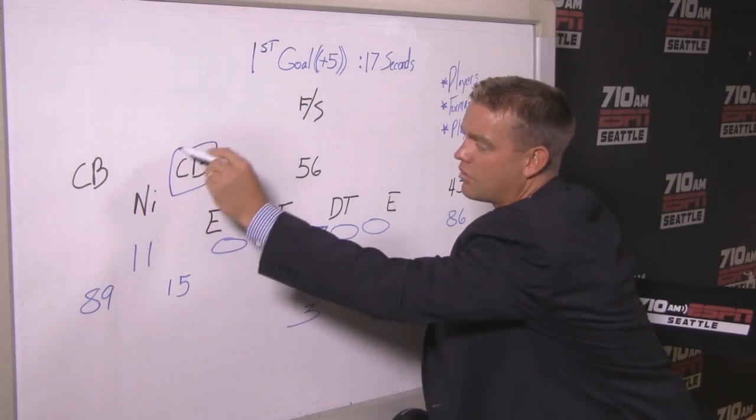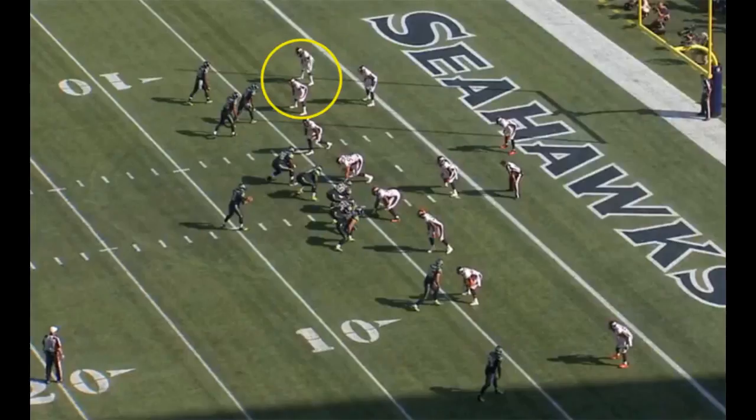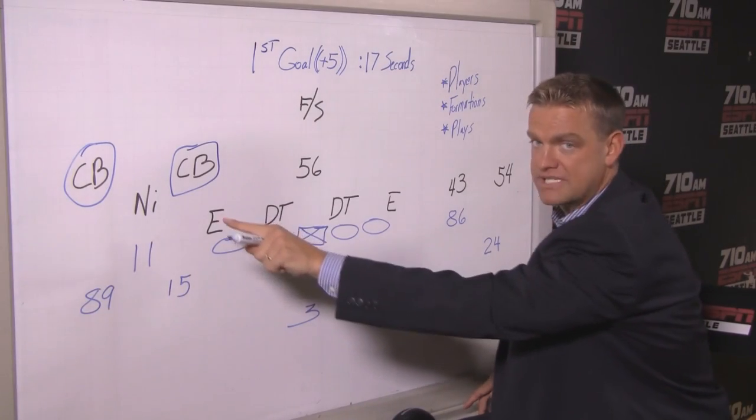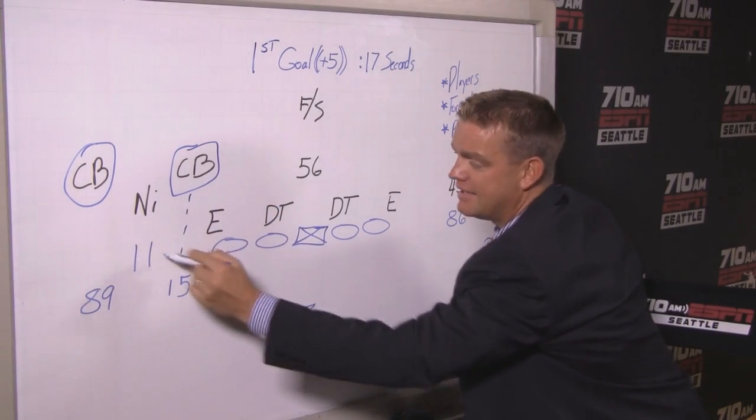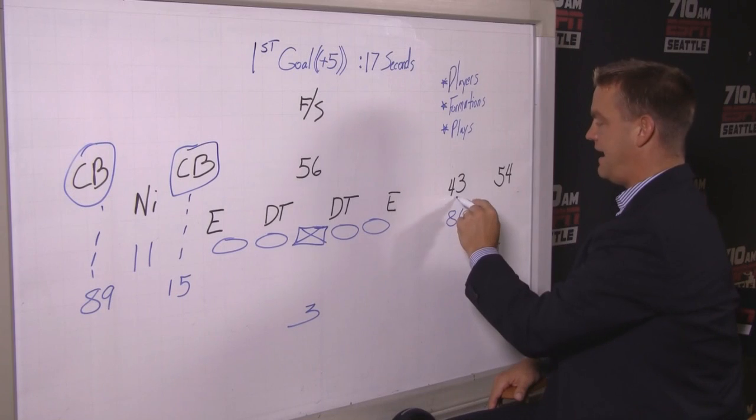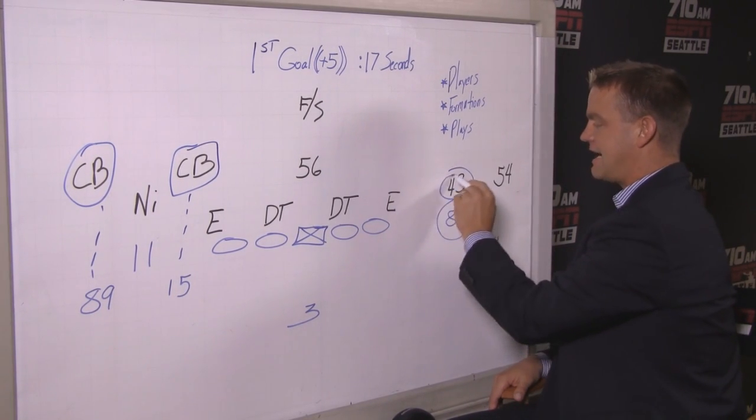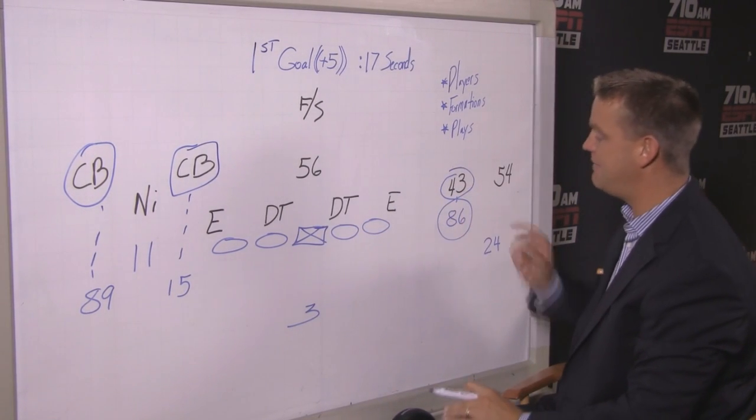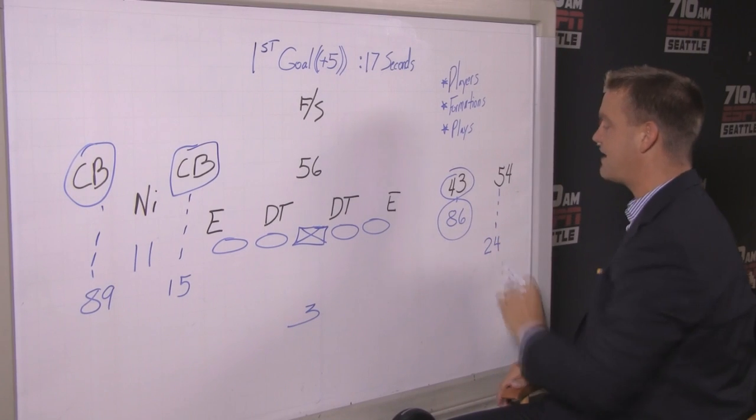And the minute that Denver goes corner over, number three knows that they're playing man-to-man. When you get in these sets and you get into three-by-two sets or three-by-one sets, if they go corner over as Denver does, well, immediately, Russell Wilson knows they're playing man-to-man coverage. The other tell is obviously T.J. Ward in a press alignment. Everything is man-to-man. The linebacker out on Marshawn.